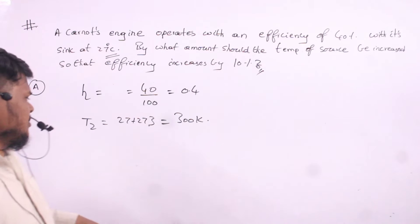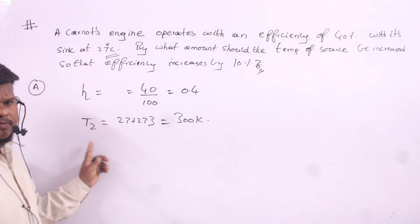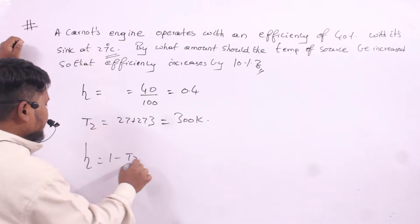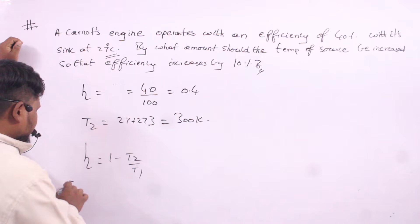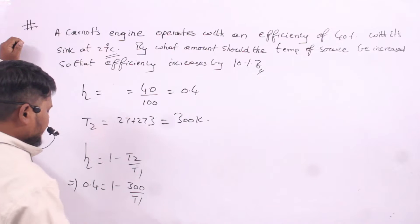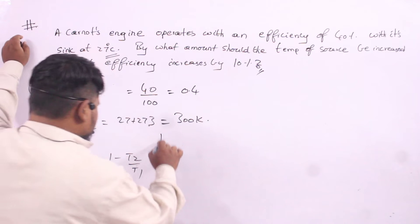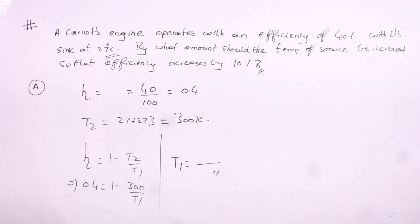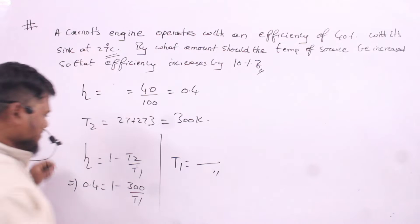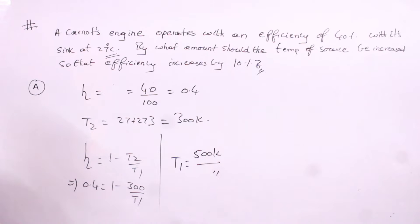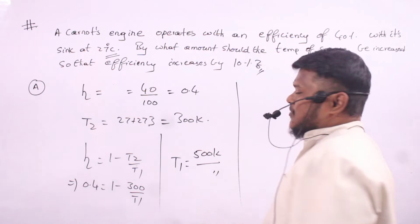We need to find T1, the temperature of the reservoir. Substituting into the efficiency formula: efficiency equals 1 minus T2 divided by T1. So 0.4 equals 1 minus 300 divided by T1. Solving this, T1 equals 500 Kelvin.